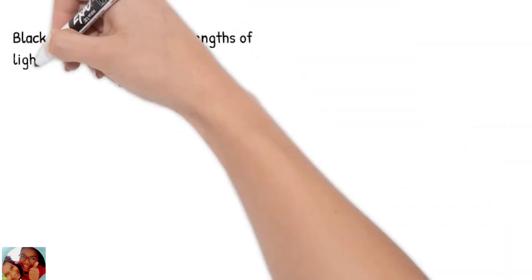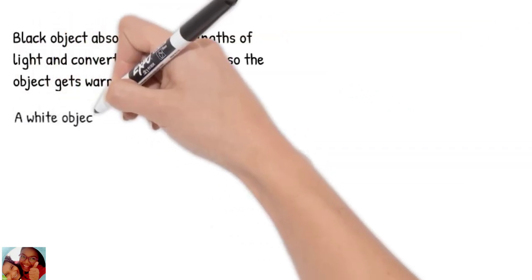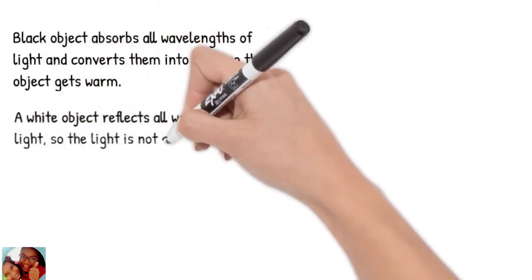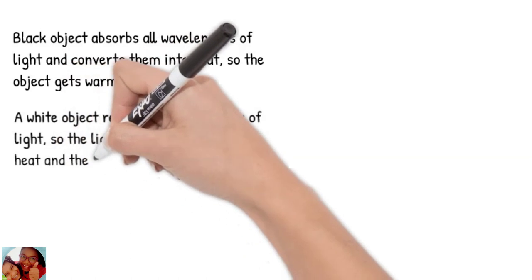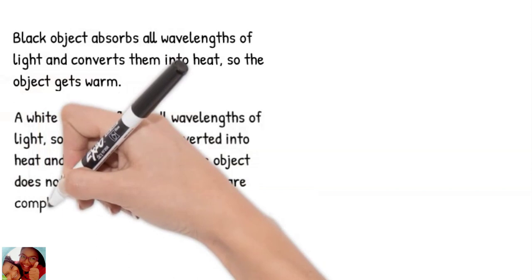Black objects absorb all wavelengths of light and convert them into heat, so the objects get warm. A white object reflects all wavelengths of light, so the light is not converted into heat and the temperature of the object does not increase noticeably.